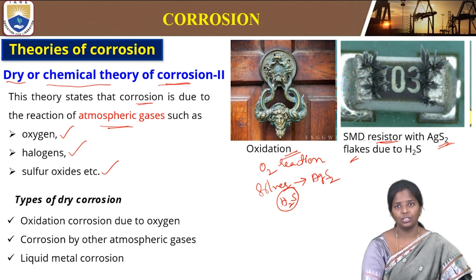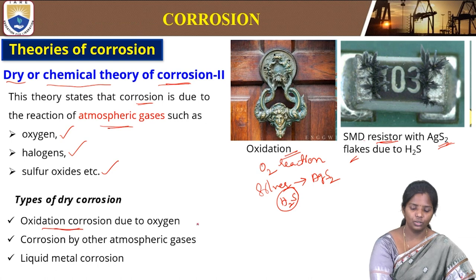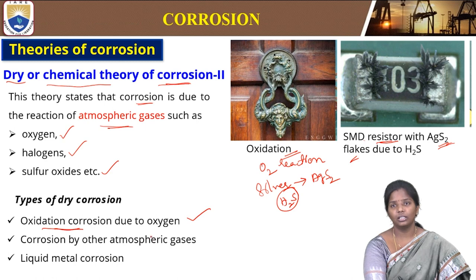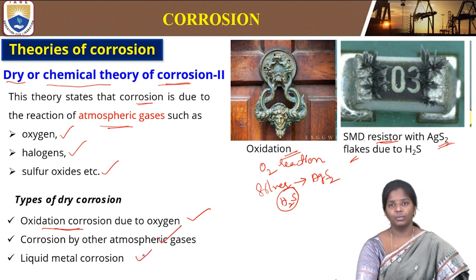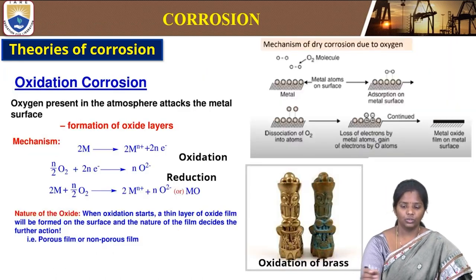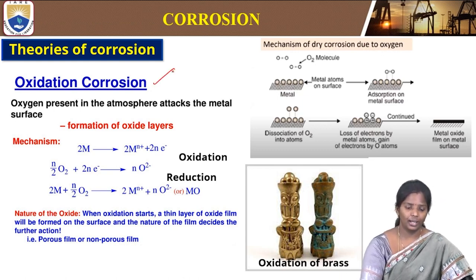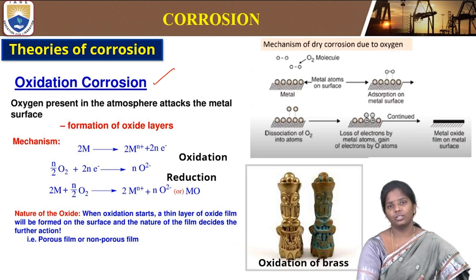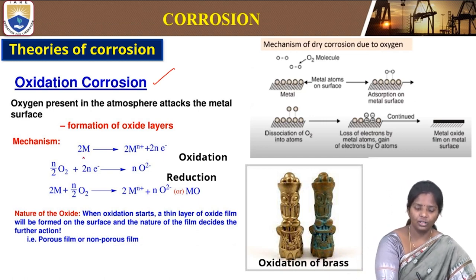There are different types of dry corrosion depending upon the gases that are reacting: oxidation corrosion due to oxygen, then corrosion by other atmospheric gases other than oxygen, then liquid metal corrosion. In oxidation corrosion, the oxygen present in the atmosphere will react with the metal forming some oxide layers. The metal undergoes oxidation — M → M²⁺ + 2e⁻.